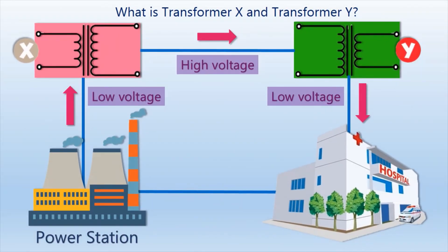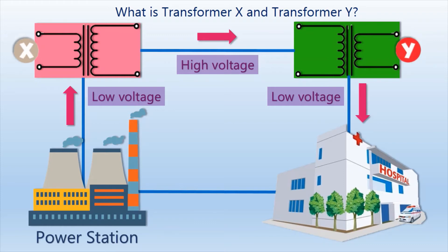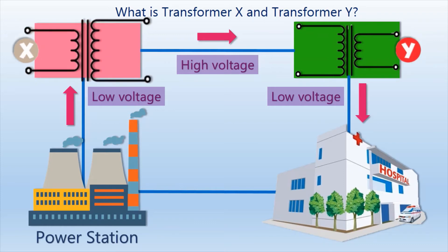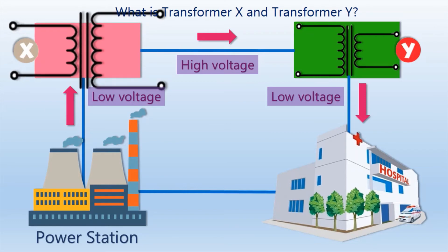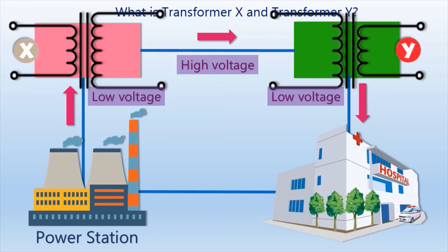This is the electricity transmission and distribution system where both Transformers are applied. Can you guess what Transformer X and Transformer Y are? Transformer X transforms a low voltage into a high voltage, so Transformer X is a Step-Up Transformer. Meanwhile, Transformer Y converts a high primary voltage into a low voltage, so Transformer Y is a Step-Down Transformer.